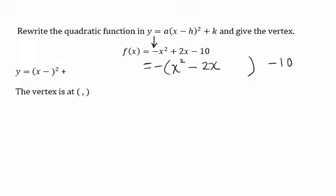Next, we're going to complete the square, and to do that, we'll take half of b, which in this case is negative 2, and square it. And so that gives us negative 1 squared, or 1.